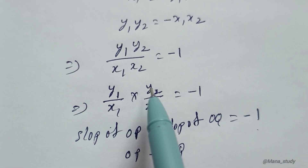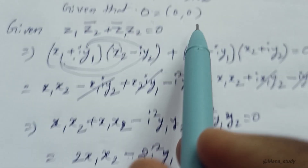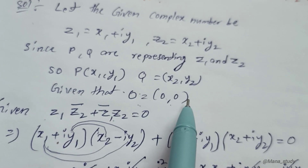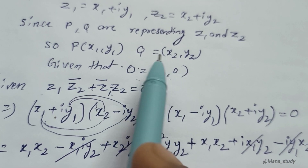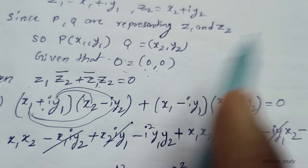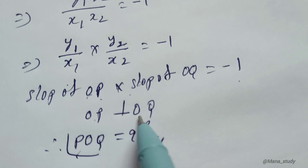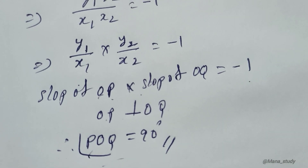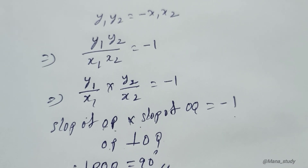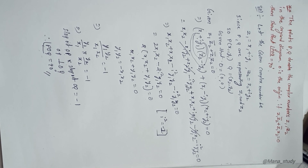So that is the answer. The slope of OP and slope of OQ multiply to minus 1, giving us angle POQ equals 90 degrees. Thank you for watching. Bye.